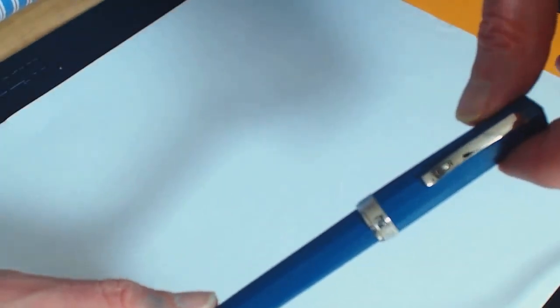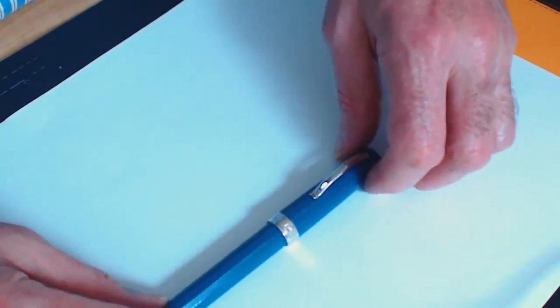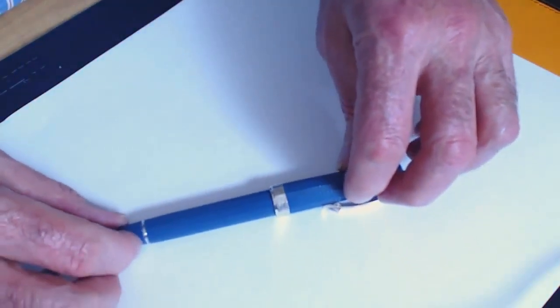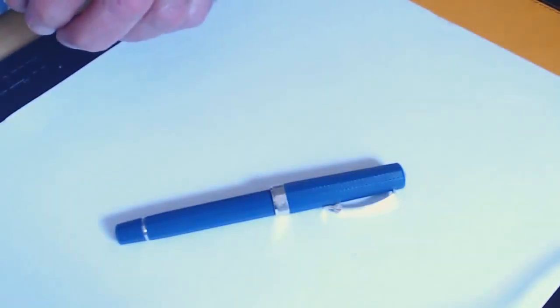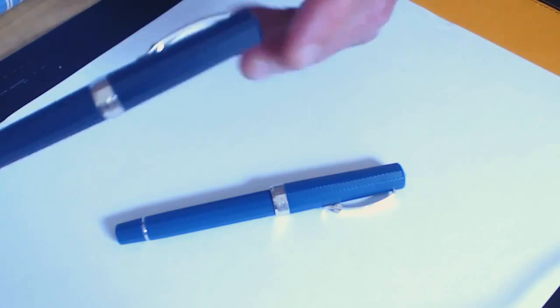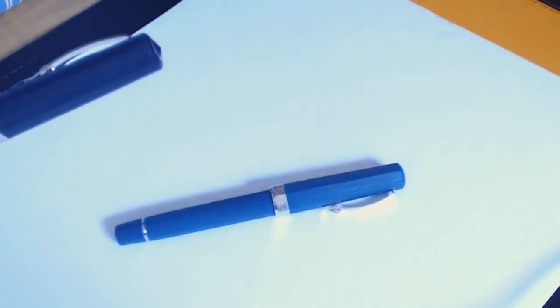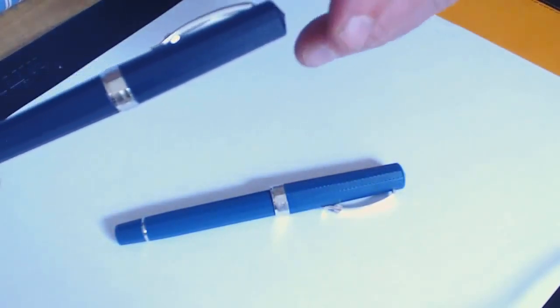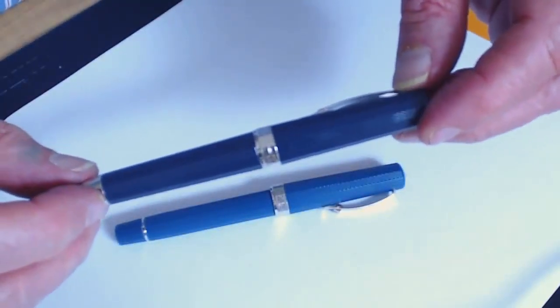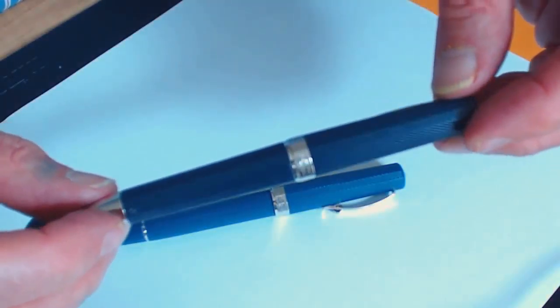The pen comes in two colors, so we've got this one—and again, do bear in mind my concerns about color reproduction on this video. This is described as teal green, and I would say it certainly is quite a lot greener than it's appearing on my monitor anyway.